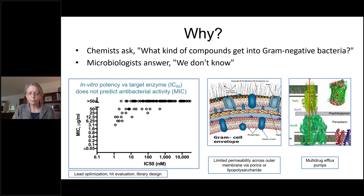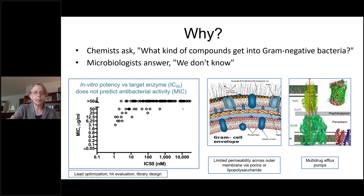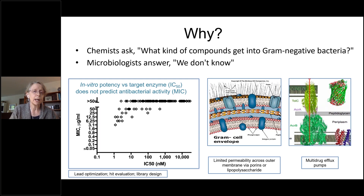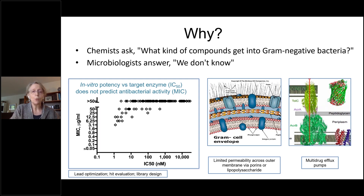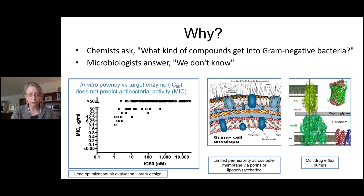The plot in the bottom left is typical of an early stage in a target-directed program. You see 100 or so compounds. The x-axis is in vitro activity towards the enzyme in IC50, and compounds are well down into the single-digit nanomolar range. But most of them have no antibacterial activity — the MIC on the y-axis is greater than 50 micrograms per ml. A few compounds have weak antibacterial activity, but the MICs are poorly correlated with the in vitro IC50s.